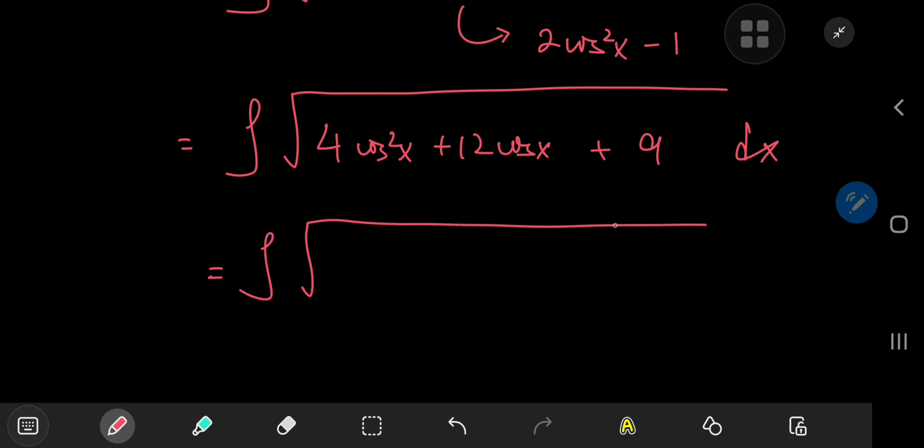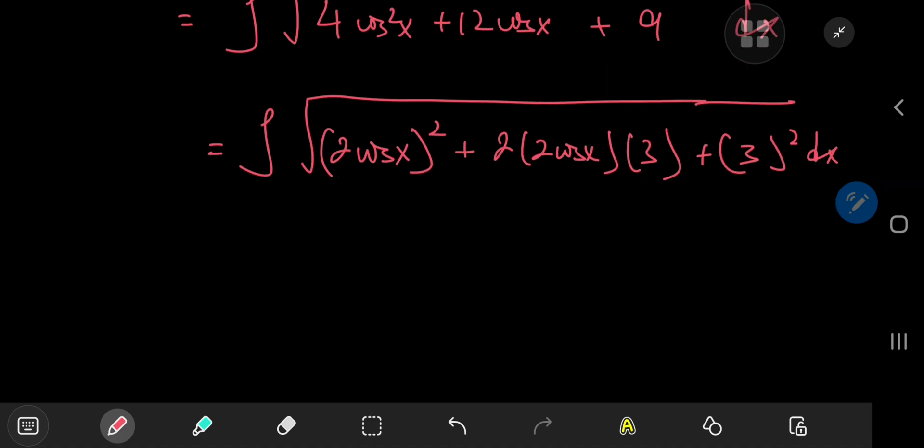So you can write this as the integral of the square root of 2 times the cosine of x squared, plus 2 times 2 cosine x times 3, which sits well with the 9 term here, because it's the square of 3.